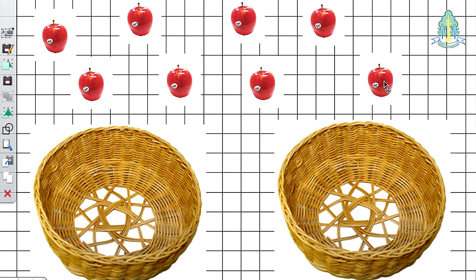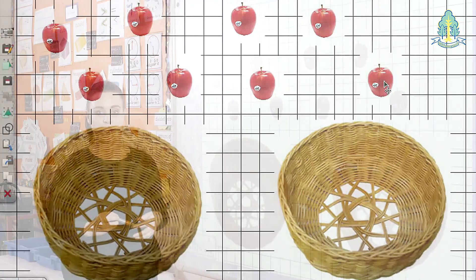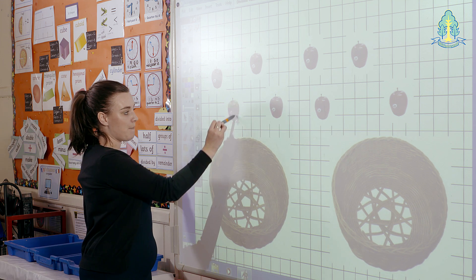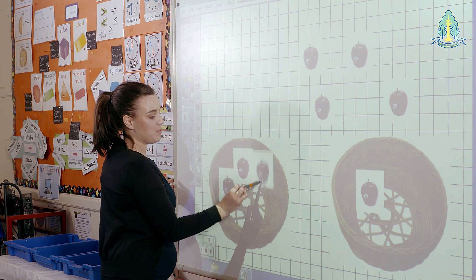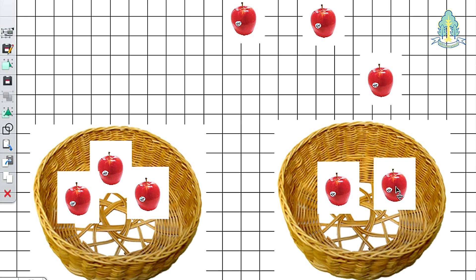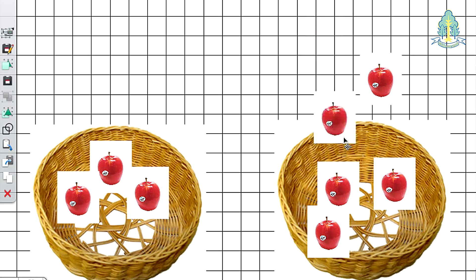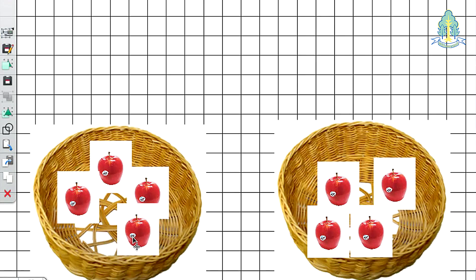Children would first complete concrete examples like this. We have eight apples on the board and two baskets. We would visually show the children how to share the apples between the two baskets by moving the apples until there are an equal amount in each basket. Like this.